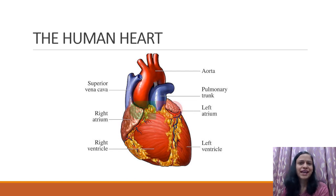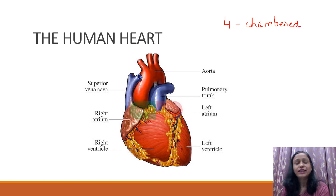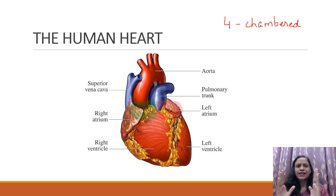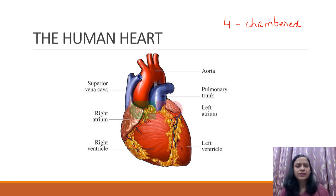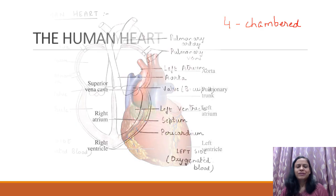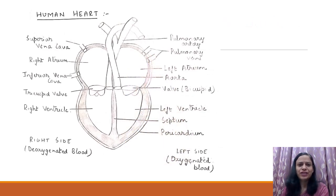Before we see that diagram, we all need to know that the human heart is basically a four-chambered heart. That means we have four chambers inside our heart. The left and the right side are totally separated from each other by a muscular wall that divides the heart into two. The upper and lower chambers can communicate through the walls present in them, and these walls provide a one-way movement to the blood — blood can flow only in one direction and cannot flow in the reverse direction.